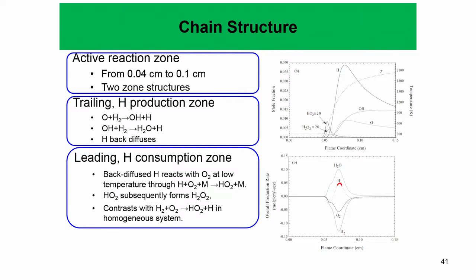H is produced by two mechanisms: H₂ (the hydrogen fuel) attacked by oxygen atoms produces OH + H, and H₂ attacked by hydroxyl OH produces H₂O + H. This H atom, once formed, can back-diffuse upstream. Once it back-diffuses, the termination reaction H + O₂ + M → HO₂ + M can happen, which results in the consumption of hydrogen. That is why we first have consumption of H atoms followed by production of H atoms — giving rise to this unique structure.